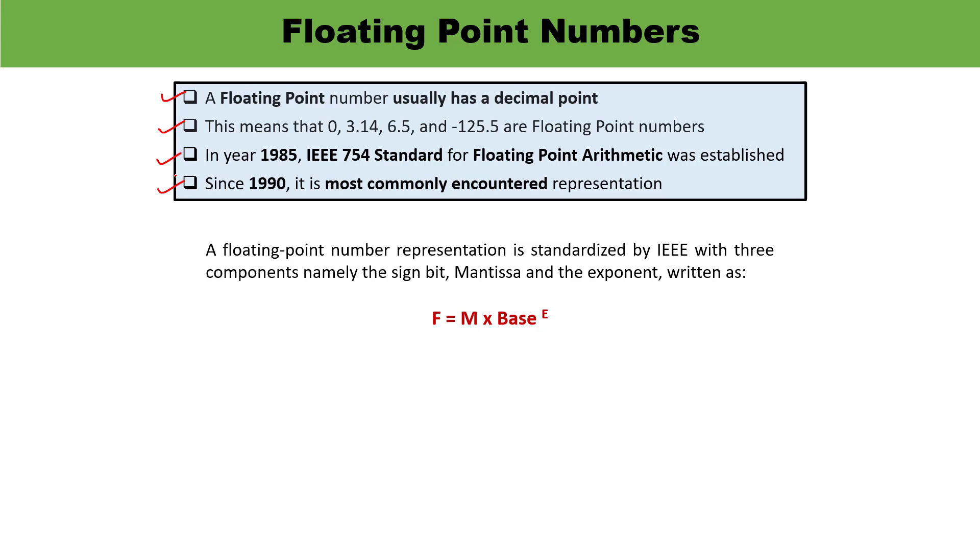A floating point number has three components: sign, mantissa, and exponent. It is written as M times base raised to the power E. For example, 0.123 times 10 raised to the power minus 4 has mantissa 0.123, exponent minus 4, and base 10. This is how you can represent it.